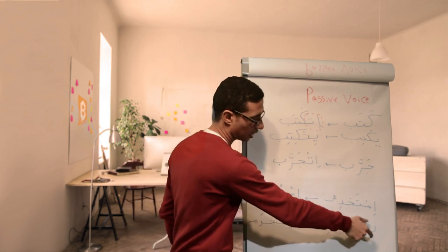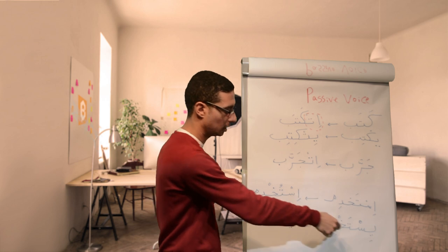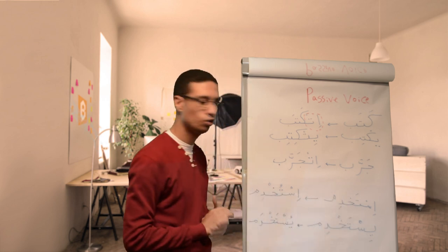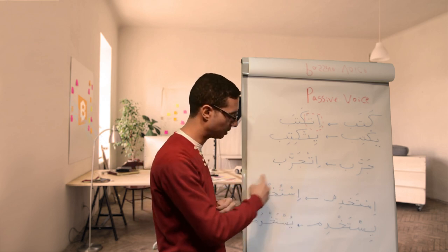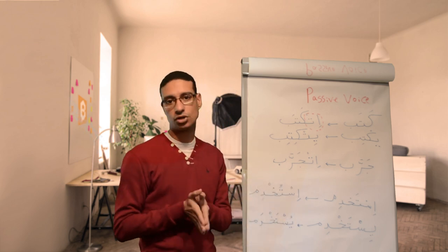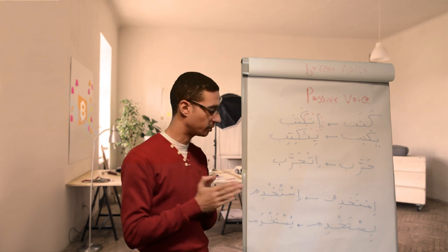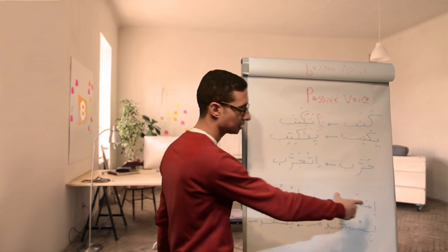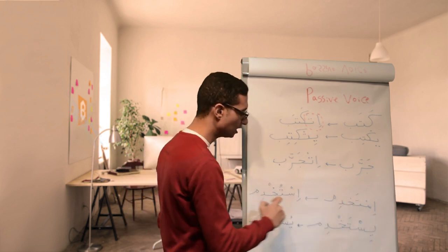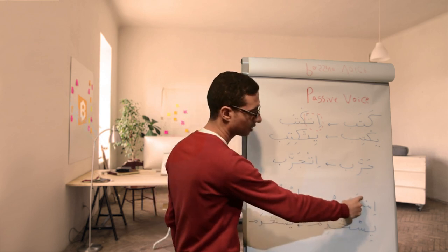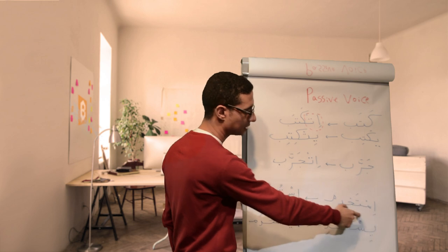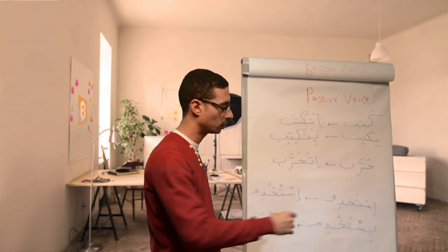For longer verbs, like istakhdim, istakhdim, he used, we stick to the passive voice form from standard Arabic, if you're familiar with the standard Arabic. If not, it's istakhdim, it will be istukhdim. So the ta here, any verb starts with ista like istakhdim, ista'mal, and so on.